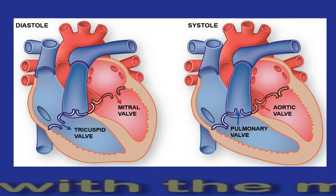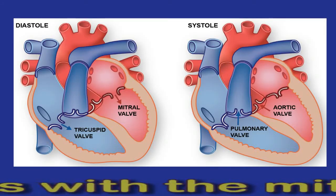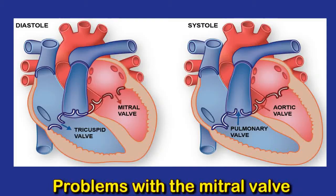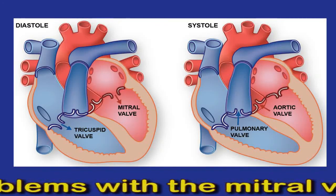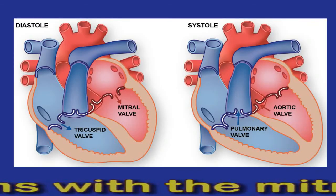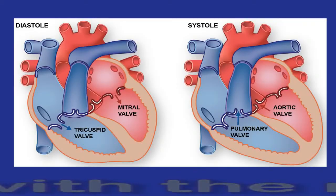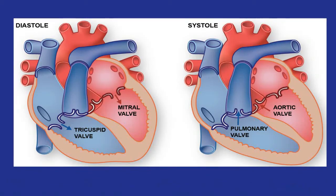Problems with the mitral valve: oxygenated blood passes through the mitral valve from the left atrium to the left ventricle. Problems with the mitral valve can lead to left atrial enlargement. Possible conditions include mitral stenosis, which is when the valve narrows and makes it difficult for blood to pass from the atrium to the ventricle, and mitral regurgitation, which is when blood leaks from the left ventricle back into the left atrium. In healthy people the mitral valve only flows one way. If mitral stenosis or regurgitation is severe, the left atrium will enlarge to compensate for the increased pressure.